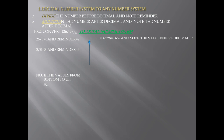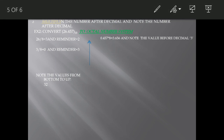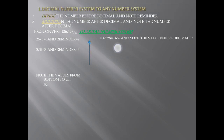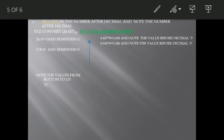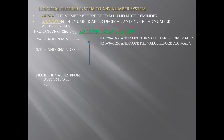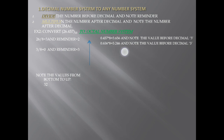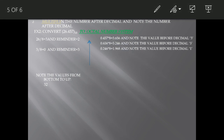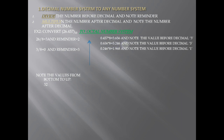For the fractional part, 0.457 is multiplied by 8, giving 3.656. Note the digit before the decimal: 3. Then 0.656 is multiplied by 8, giving 5.248. Note the digit before the decimal: 5. Next, 0.248 is multiplied by 8, giving 1.968. Note the digit before the decimal: 1.